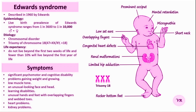Normally, people have 46 chromosomes, but in Edwards Syndrome there is an additional copy of chromosome 18, making a total of 47 chromosomes. This extra genetic material disrupts normal development, leading to serious physical and developmental disabilities.